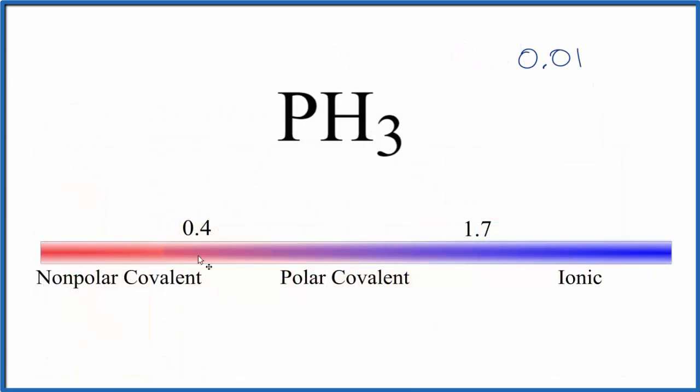Let's see what that means. So below 0.4 is non-polar covalent. So this is 0.01, that's right out here. So PH3 is going to be a covalent compound.